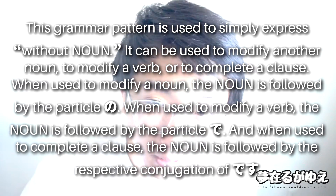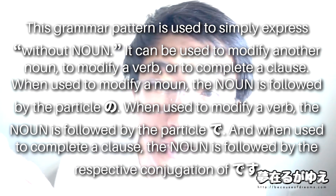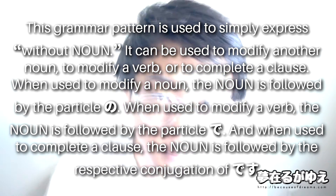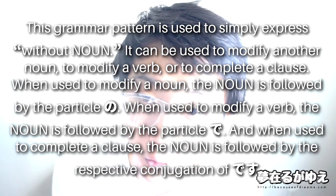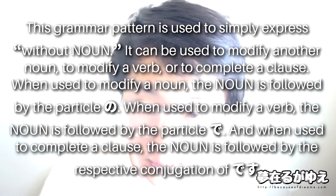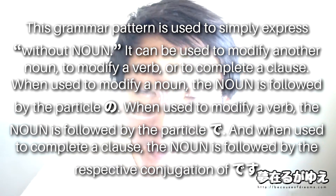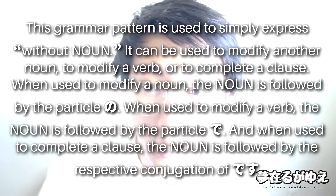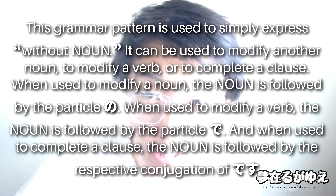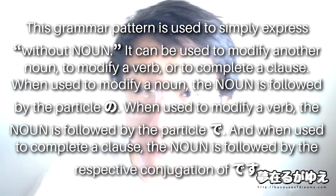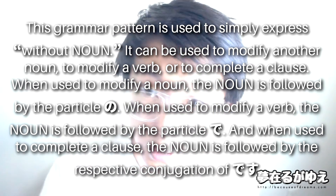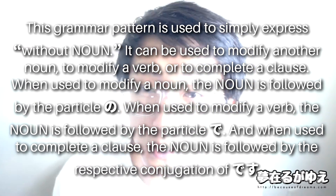Upon hearing the phrase nashi, you might correlate that with the negative nai form — basically the phrase nai, which makes a verb into its negative form. Nashi is basically the same thing as nai, just nai in a different form. So it will translate to something along the lines of — not so much 'not,' but in this case, 'without.' So noun plus nashi will translate to basically 'without noun.' We can use it to modify another noun, to modify a verb, or to complete the clause. Those three options are exactly what the three particle choices lead to.